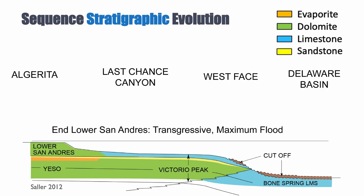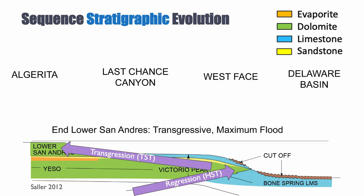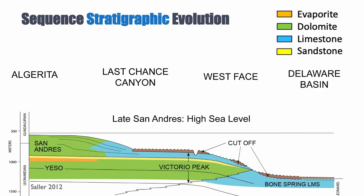Notice that there are cutoffs formed at low stands that represent erosion and the deposition of clastics. Looking at this evolution, we see a regression of the shoreline — a progradation of the carbonates during the Yeso and Victorio Peak — but the San Andreas formation represents a transgression of the shoreline, so a retrogradation of the carbonates. The carbonates during the lower San Andreas do not keep up with accommodation space.